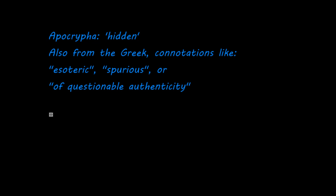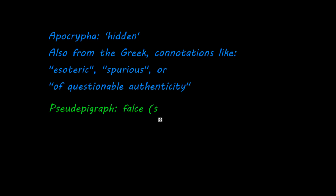The last word I want to discuss is the word pseudepigraph. I haven't used this word before, but you will encounter it in many books. Pseudepigraph means false authorship. You may recognize the pseudo part — for example, when you talk about pseudoscience it means fake. And the part epigraph in this case means authorship. So when a book is claimed to be written by person A, but in reality is written by someone else, by person B, then it is often called a pseudepigraph.